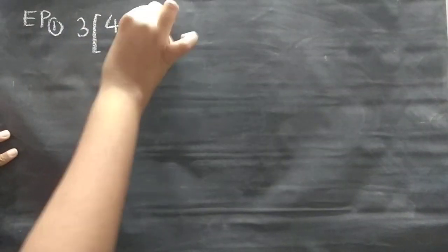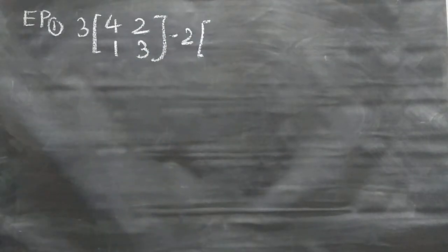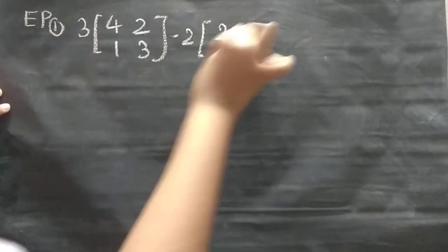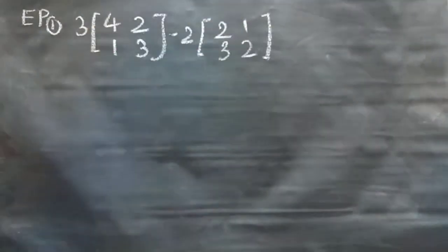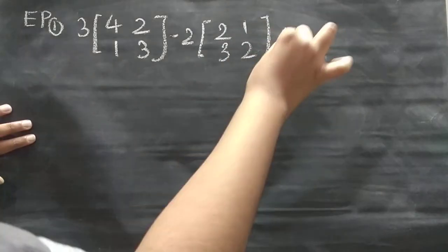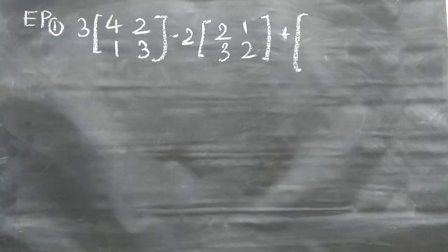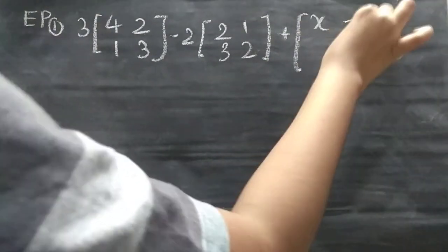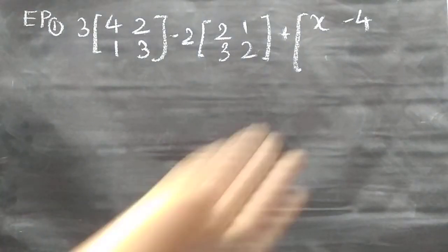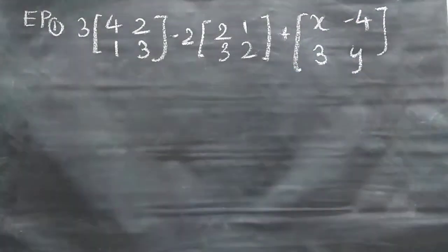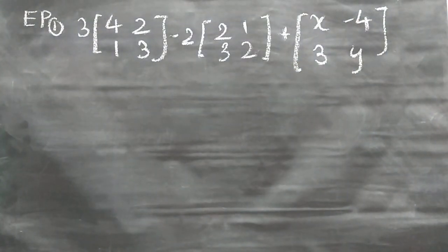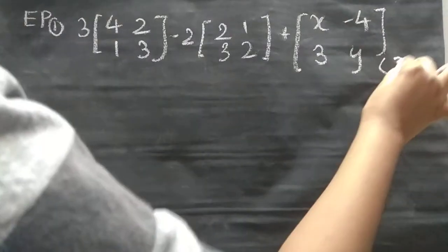First, general package, first question. We have 3 multiplied by the matrix [4,2;1,3] minus 2 multiplied by the matrix [2,1;3,2], plus the matrix [x-4, 3y; ...]. We have to find the value of x and y.